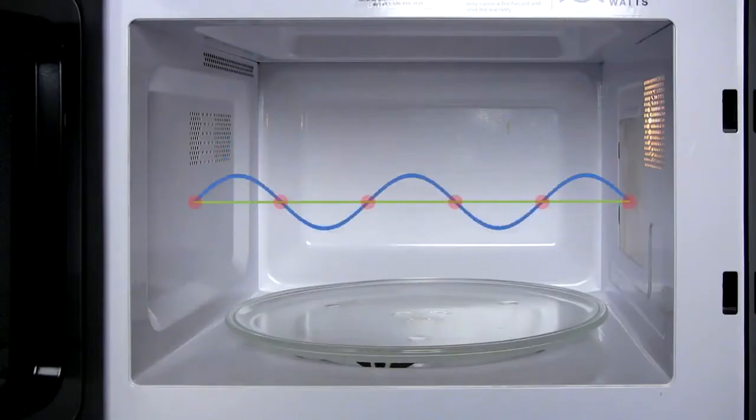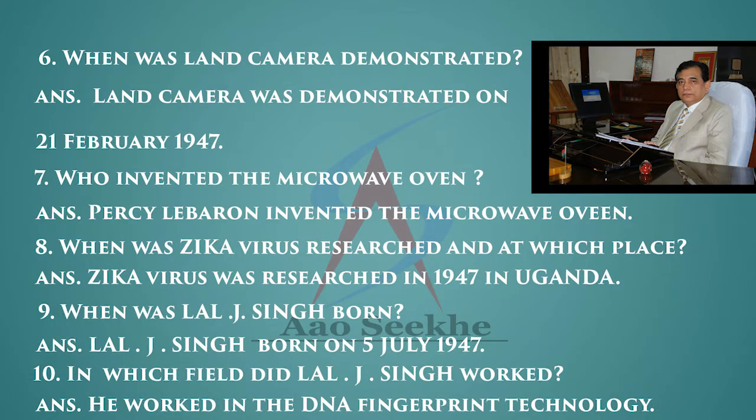Seventh: who was the inventor of the microwave oven? Percy invented the microwave oven. Eighth: when was the Zika virus researched and at which place? The Zika virus was researched in 1947 in Uganda.